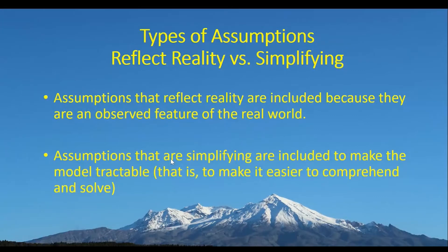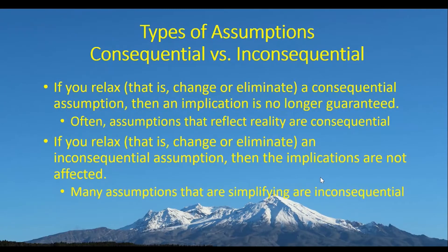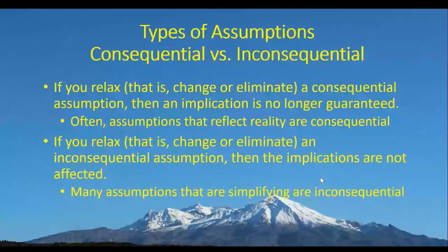If we include too many aspects of the world, models become intractable — we can't tell what the results would be. That's the nature of modeling: simplify the world to get a handle on it. Now I'll also talk about consequential versus inconsequential assumptions. Consequential assumptions are the ones that matter — they directly impact the outcome. If you relax, meaning change or eliminate, a consequential assumption, an implication is no longer guaranteed. Drop a consequential assumption and we lose the outcome. But if you relax an inconsequential assumption, the implications are not likely to be affected. I'll give you examples using maps.